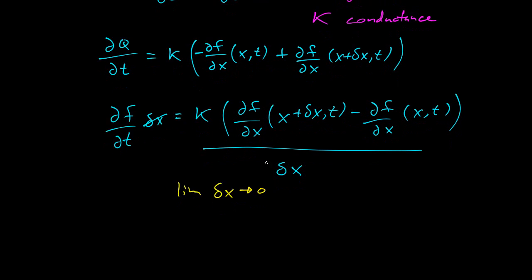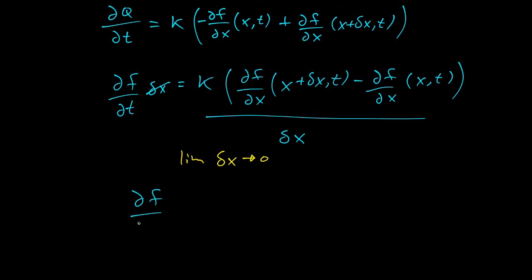Now I want to take the limit as delta x goes to zero. What happens? You end up with partial of f with respect to t equals k. And as delta x gets smaller and smaller, what does this look like here? This is a function evaluated at the right minus a function evaluated at the left over the difference. So if you remember back to calculus, this limit will actually be the derivative. So the second derivative there, because this function is the first derivative. And then this taking the limit gives another derivative.